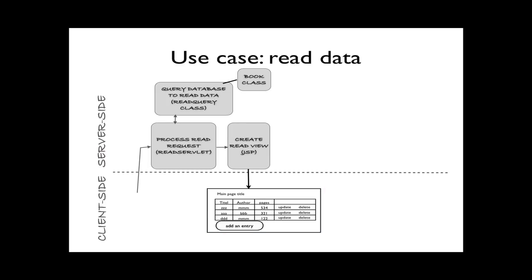Here we see that we're going to need four components to be built to handle this use case. The book class will be reused, so once we create that once, we will not need to create it again for other use cases. However, the other components will be unique to this one use case.